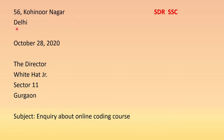So it's given: 56 Kohinoor Nagar, Delhi. Then comes D — the date — so write the date: October 28, 2020. Then comes R — the receiver's address. So you can write: The Director, White Hat Junior, Sector 11, Gurgaon. Since it is not specified to whom you have to write the letter, you can write 'The Director' or 'The CEO,' as these online companies have a CEO also. Either of the two will be correct.